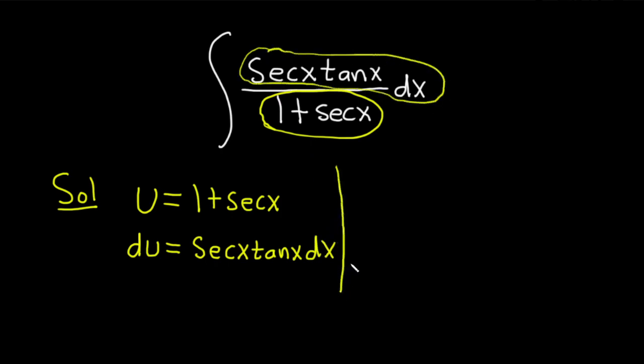Now rewriting our integral using our substitution becomes the integral of, so secant x tangent x dx, we know that's du. I'm going to put that up top. And on the bottom we have 1 plus secant, well that's just u. So it's du over u.